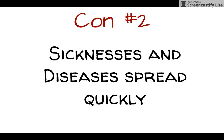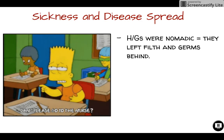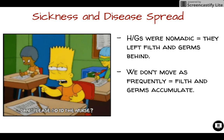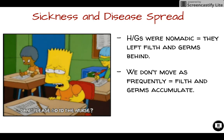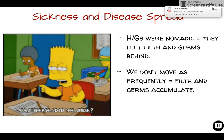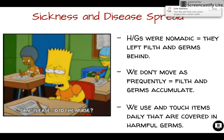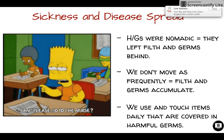Another big con of agriculture is that sicknesses and diseases spread incredibly quickly. Hunter-gatherers were nomadic, so any illnesses or germs they could move on from since they were always on the go. In permanent settlements, we don't move as frequently, so filth and germs accumulate over and over again. Think about the desk or doorknob touched in a classroom — touched by hundreds of hands on a daily basis — and we can contract diseases and illnesses from that.